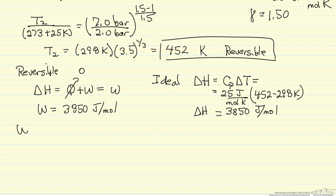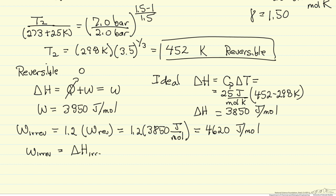We now want to calculate the irreversible work so we can get the temperature. 1.2 times the reversible work because of what is given in the problem statement. So 1.2 times 3850, and I will just carry out these calculations. So now we have the irreversible work. First law is the same for the system, Q is still 0. Irreversible work is going to be delta H for the irreversible process. That means delta H is 4620 joules per mole.